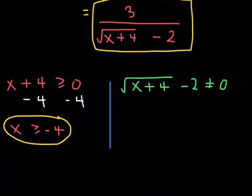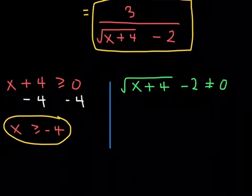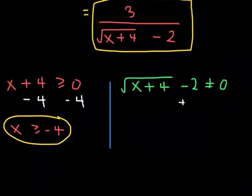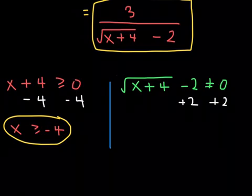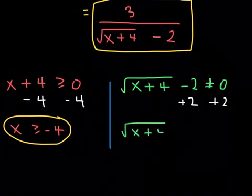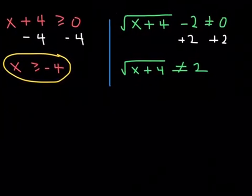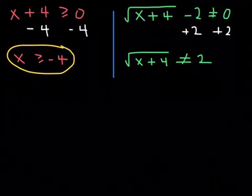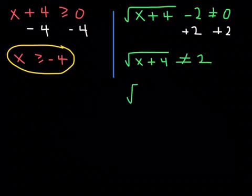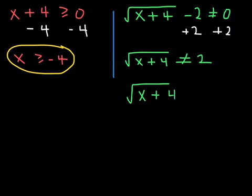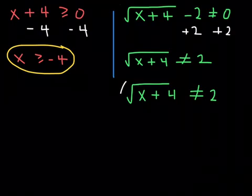And whatever real number makes the denominator 0, we have to exclude that number from the domain. In order to figure out what x value makes the denominator 0, we have to solve this statement for x. The first thing you're going to see me do is add 2 to both sides.